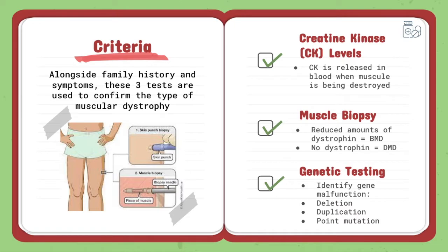Genetic testing is the best indicator of a patient having BMD. Through either deletion, duplication, or point mutation testing, doctors can identify gene malfunction. Some other things doctors look out for are abnormally developed bones, specifically in the chest and back, cardiomyopathies, congestive heart failure, fat and connective tissue in calf muscles, and muscle wasting around the body. Electromyography testing may also be used to test the health of muscles.